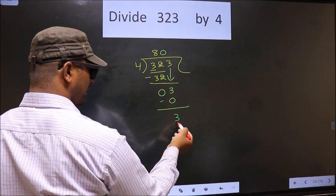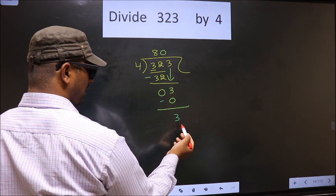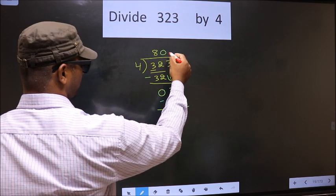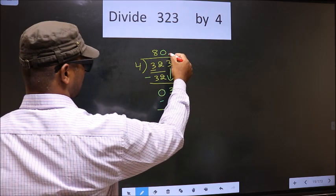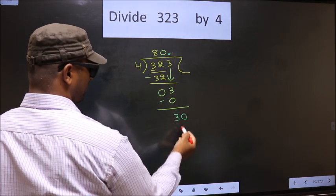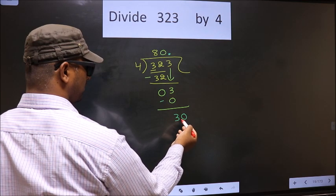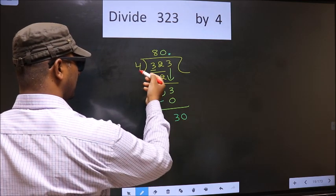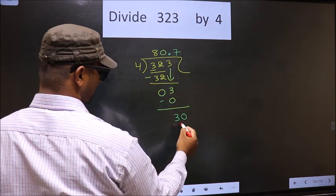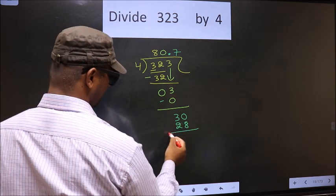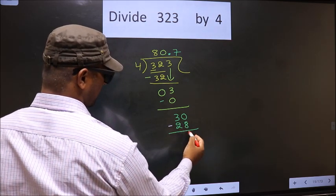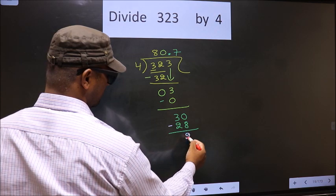Over here we did not bring any number down, and 3 is smaller than 4. So here you can put a dot and take 0. Now here we have 30. A number close to 30 in the 4 table is 4 sevens — 28. Now you subtract — 30 minus 28 is 2.